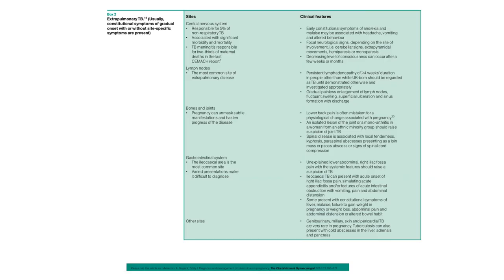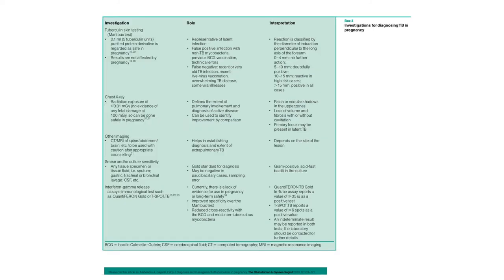Extrapulmonary TB sites include the central nervous system, lymph nodes, bones and joints, gastrointestinal system, and other sites such as the genitourinary system, skin, and pericardium. Investigations include tuberculin skin testing, chest X-ray, other imaging such as CT and MRI of the spine, abdomen, and brain, smear and/or culture sensitivity, and interferon-gamma release assays. Risk factors for TB include close contact with infectious cases, living in or travel to or receiving visitors from places where TB is common, living in ethnic minority communities, having an immune system weakened by HIV or other medical problems, being very young or elderly, chronic poor health and nutrition due to homelessness, drug abuse or alcoholism, being a migrant worker, and living in poor or crowded housing including hostels.